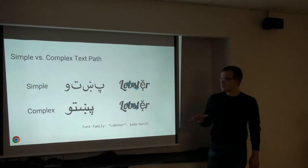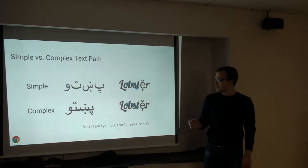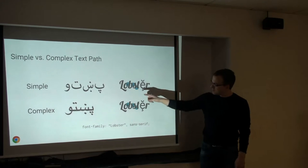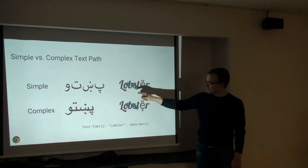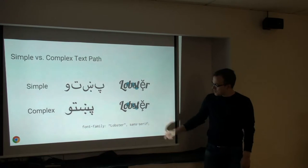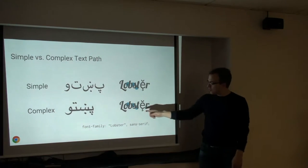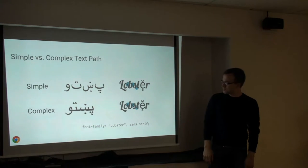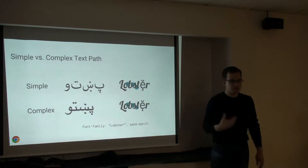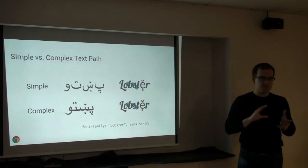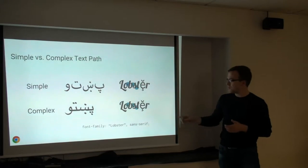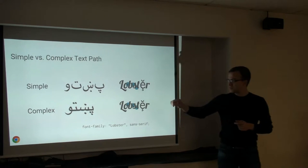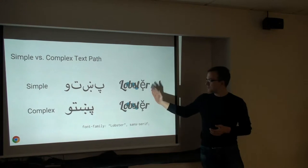You can see the difference even in Latin text. With the ornamental Lobster font, there are no joints between individual glyphs when sent through the simple path. Through the complex path, you get ligatures between the various glyphs — that's the intended result. Typographic features are enabled: the font has tables and rules for how certain characters are to be combined. In the simple path, these are not taken into account and glyphs are just stamped next to each other.